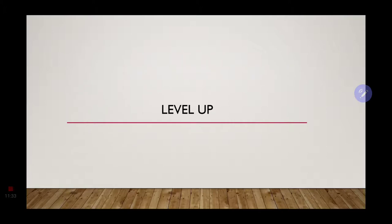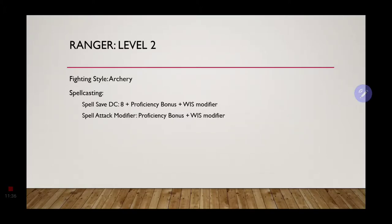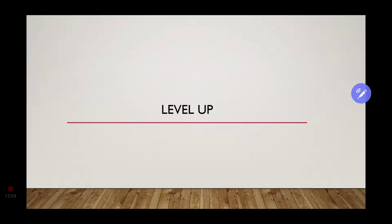That is all your different animal types, from cows to chickens. That is your favorite enemy. For natural explorer, we are going to choose forest as our favorite terrain, just because most adventures are going to start in the forest. All right, now for a level up. At level two, we get our fighting style. We are just going to go ahead and do archery. That will give us an extra bonus to our attack rolls and to our damage rolls for our ranged weaponry. We also get spellcasting.